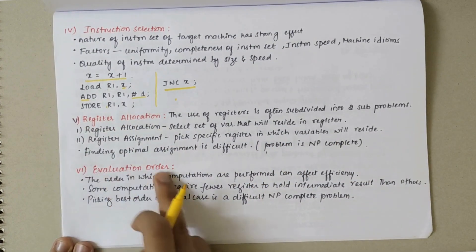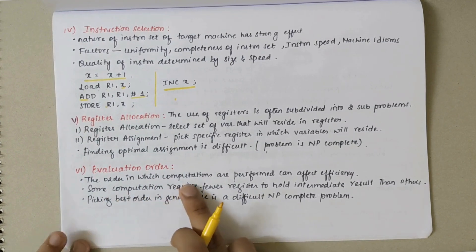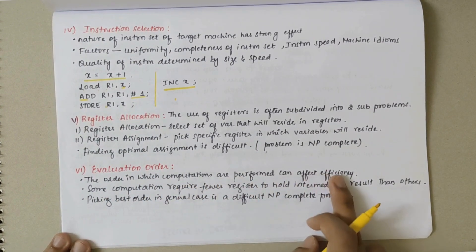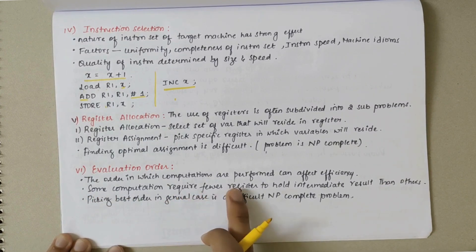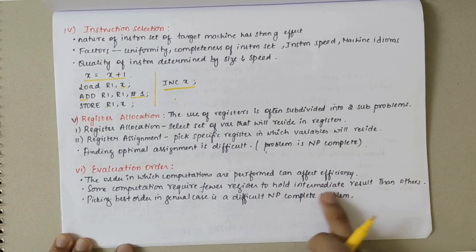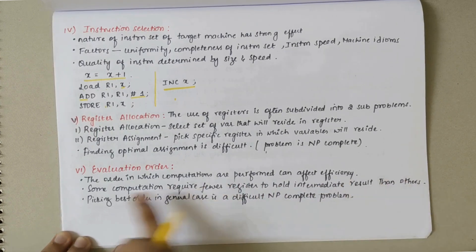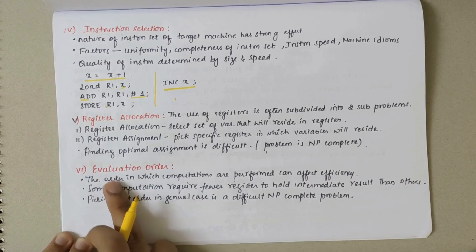Next we have evaluation order. The order in which computations are performed can affect the efficiency. There could be computations which require fewer registers to hold intermediate result than others.